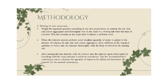For mixing of raw materials: weigh the required quantity of cement, fly ash, and fine and coarse aggregates, and slowly mix in dry state in a mixing tub with the help of a trowel. Mix until it attains a uniform color. Then add the required quantity of water to the mixture of cement, fly ash, fine and coarse aggregate. After addition of water, mix thoroughly with a trowel, then knead until the mass attains a uniform consistency. Use the standard normal consistency test to calculate the quantity of water to be added and determine the water content for normal consistency.